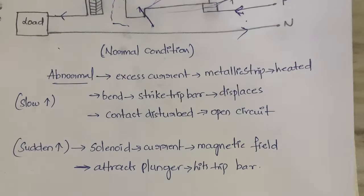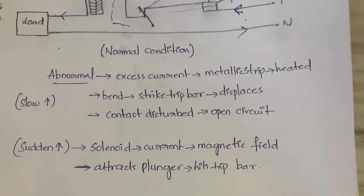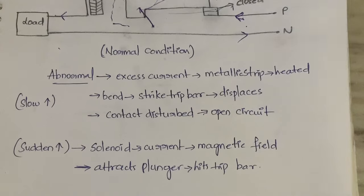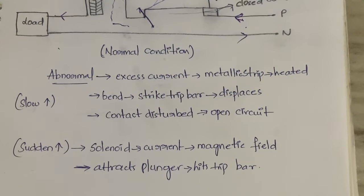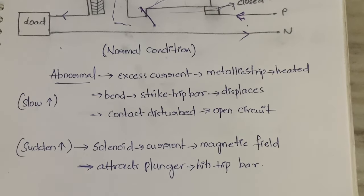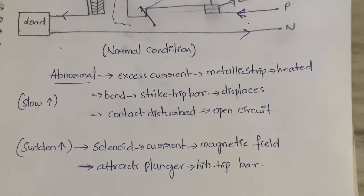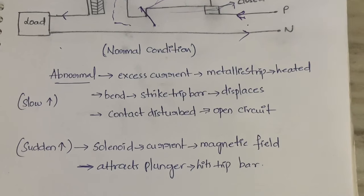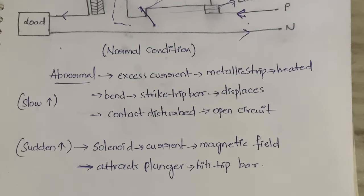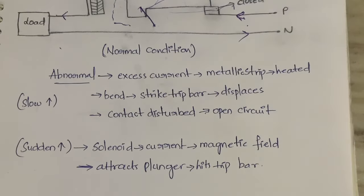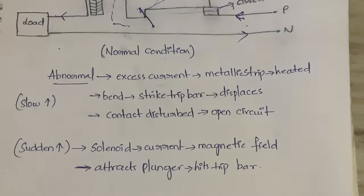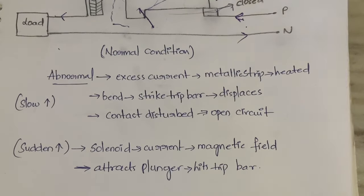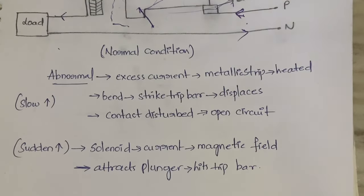I explained this briefly because you've already watched the videos on MCB and ELCB, so you understand what circuit breakers do and the mechanism. The ultimate goal is to make the circuit open so no current flows, which protects the load. In the next video we'll learn about types of wires and cables, and upcoming topics include batteries and power factors. Thanks for watching the video till the end.